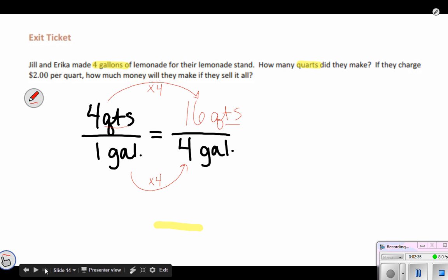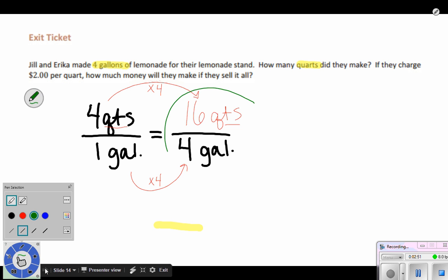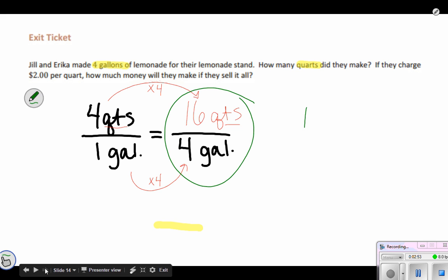Now I haven't answered the question yet, I've gotten close, but my next part is finding out how much money we're going to make if we sell it all. They said two dollars per quart, so my four gallons is equal to 16 quarts. I'm going to take those 16 quarts and times it by the two dollars per quart that they want to sell it for.